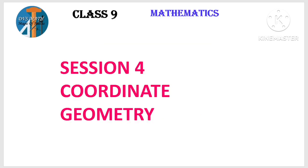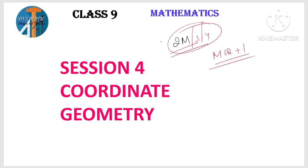Today we are going to Coordinate Geometry. Already number system and polynomials have been completed. The type of questions that appear — if you just change the numbers and practice, they will definitely give that type of question. As per the model paper, this lesson carries only two marks — one MCQ for one mark and a two-mark question. So maximum two to three marks will be given for Coordinate Geometry, since only basics are needed: quadrants, axes, and locating points.